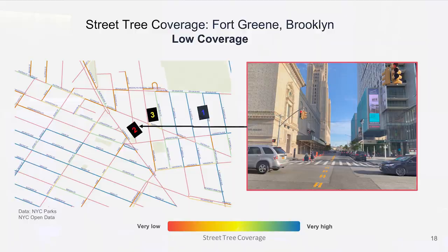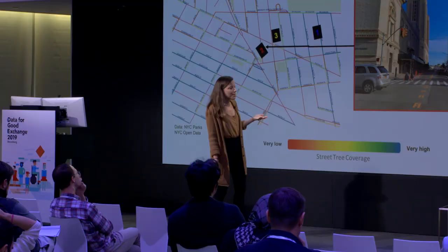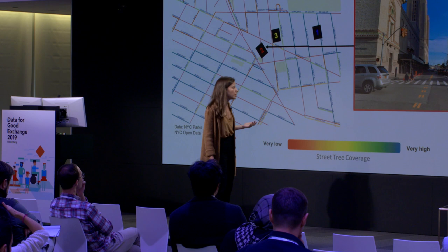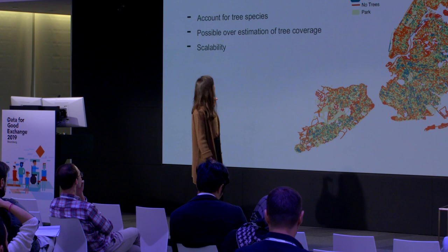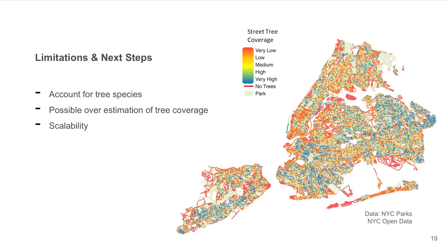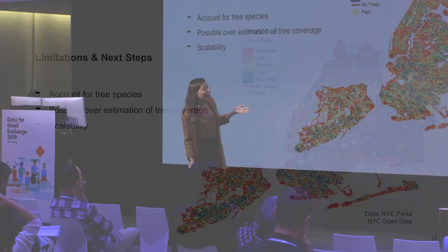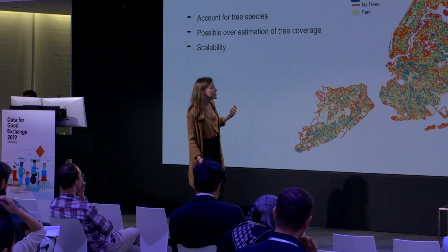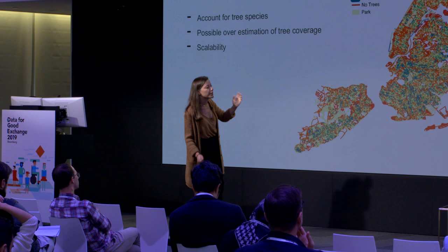To sum up this example, the use of open data, statistics, and data visualization is capable of informing public space research. In terms of limitations, there is a small overestimation of tree coverage — a fairly negligible issue that comes from the associations of trees to streets. Next steps include accounting for tree species, which can refine the relationship between DBH and crown diameter and make it more accurate, as well as an opportunity to scale up to more cities using these or similar methods.